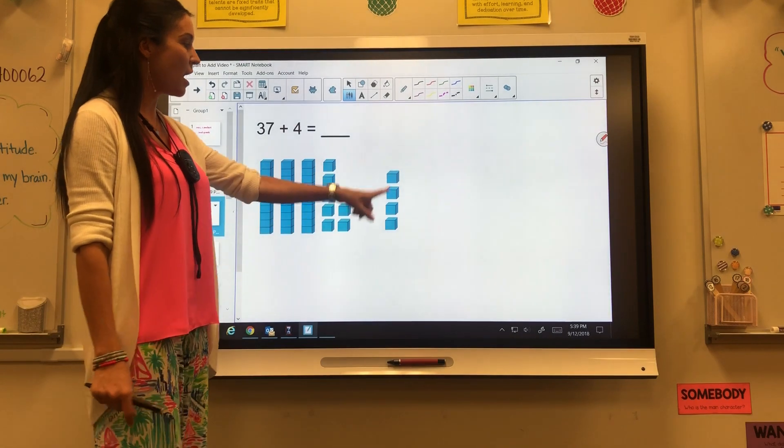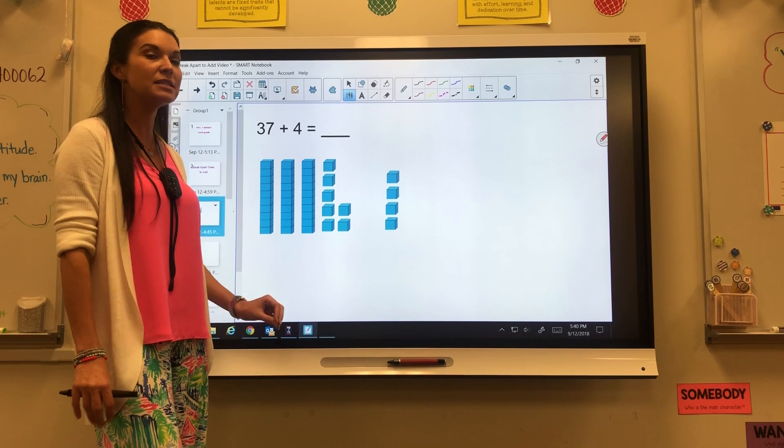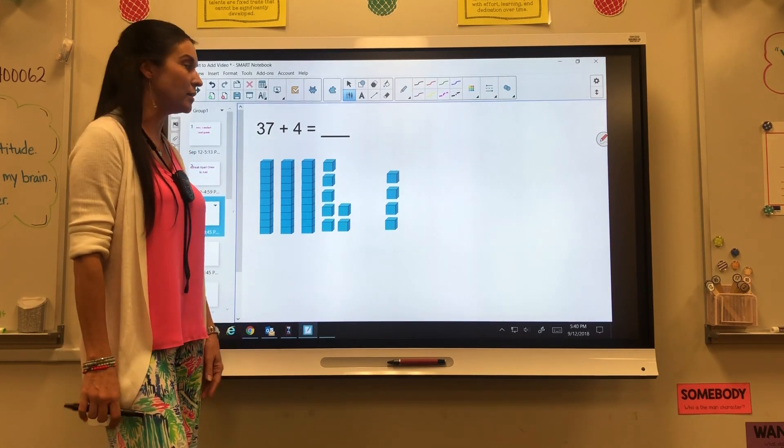And then for my four, I just need four ones. Now to add these, the easiest part, the easiest way to do it is to make a 10 with our ones.